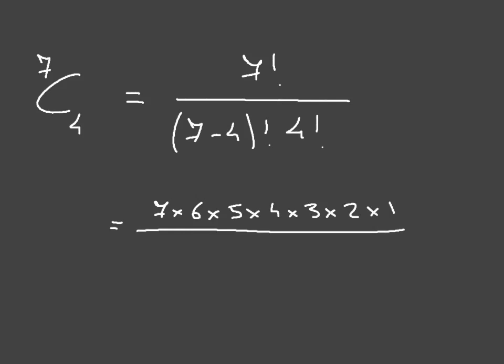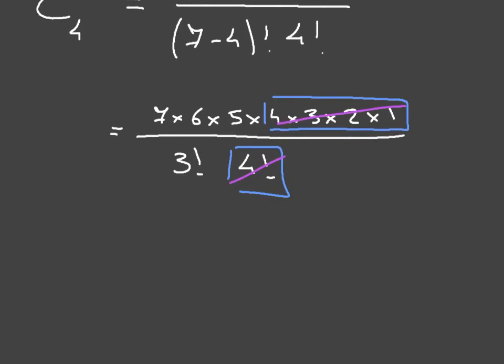The denominator would be equal to factorial of 3 times the factorial of 4. We can see that things simplify a bit. This 4 times 3 times 2 times 1 is the same thing as factorial of 4, so those two will cancel out. On top of that, we notice that the factorial of 3 is equal to 3 times 2 times 1, so that's equal to 6.